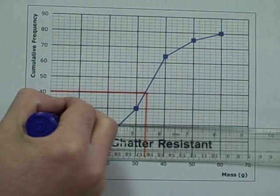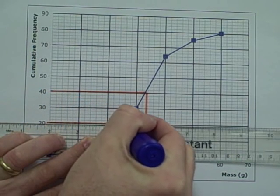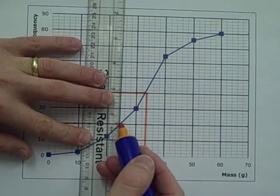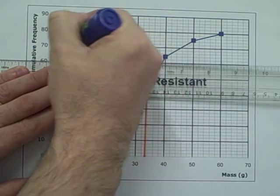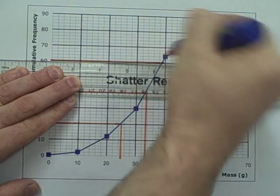The lower quartile lies a quarter of the way up the graph, so out of 80 insects it is the 20th. We repeat what we did for the median. The upper quartile lies three quarters of the way up the graph, so it is the 60th.